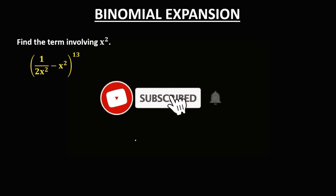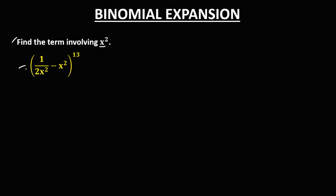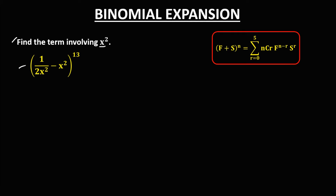Let's solve this problem: find the term involving x to the power 2 from this binomial equation. Using the binomial expansion formula, we identify the first term, the second term, and n equals 13, since we're looking for the term with x to the power 2.